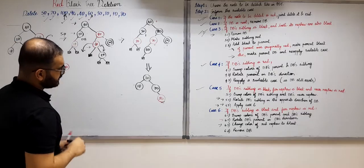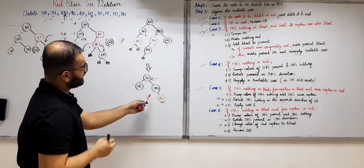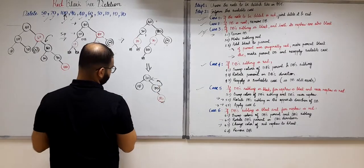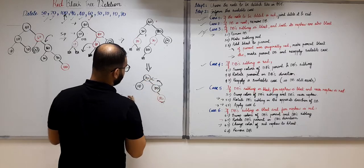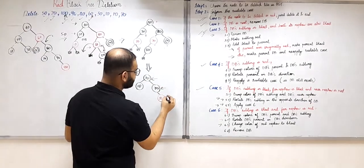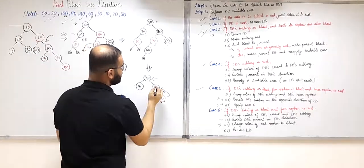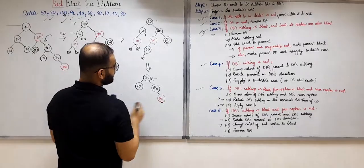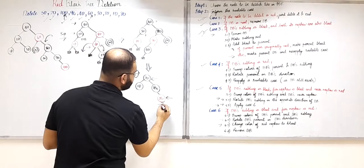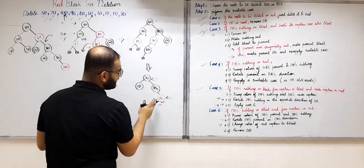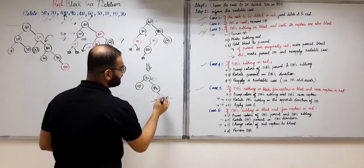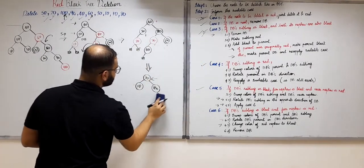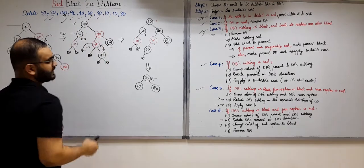The next element to be deleted is 30. Since it is an internal node, 30 gets replaced by its in-order successor, 70. Now we have to delete 70, so we replace it with its child 80 — only the value transfers, not the color. Now the element to be deleted is this leaf node 80. Since it is a red node, according to Case 1 we can directly delete it. So we delete this 80, and 30 is now deleted.